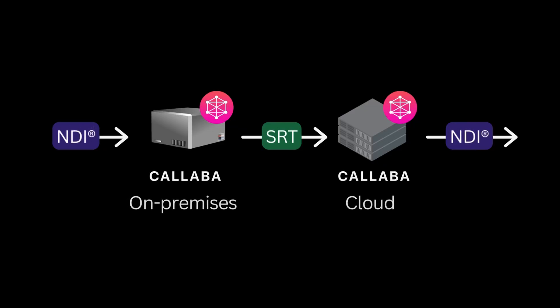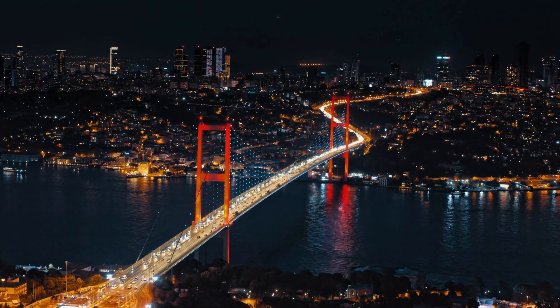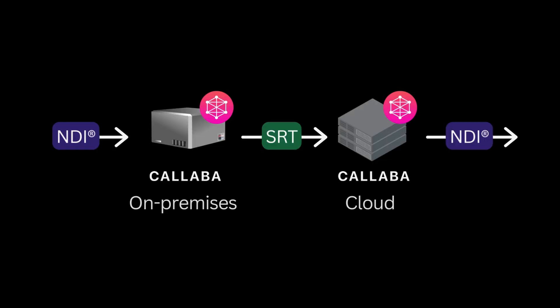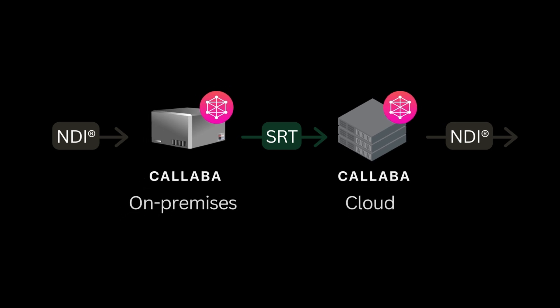Hi! In this tutorial, I'll show you how to create an NDI bridge over SRT. We'll use two instances of Calaba. The plan is to turn NDI into SRT using the on-premises instance, then convert SRT back to NDI with the cloud instance.